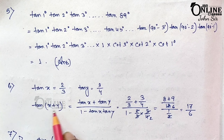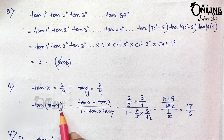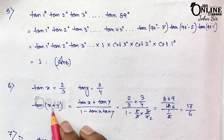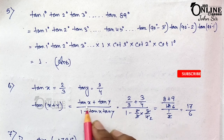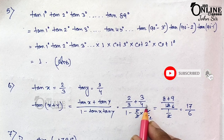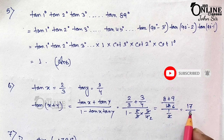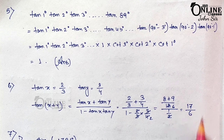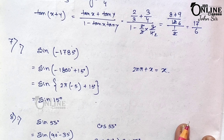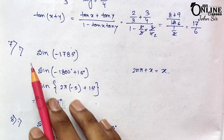Problem 6: If tan x = 2/3 and tan y = 3/4, find the value of tan(x+y). Apply the formula tan(x+y) = (tan x + tan y)/(1 − tan x·tan y), substitute the values, and calculate the answer.